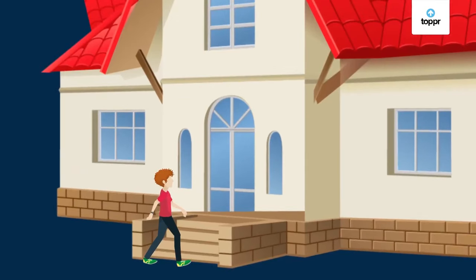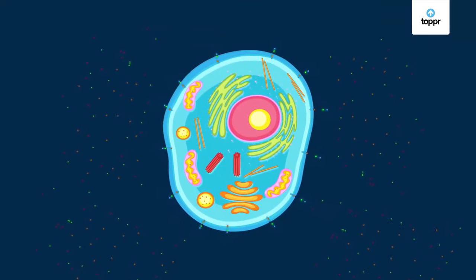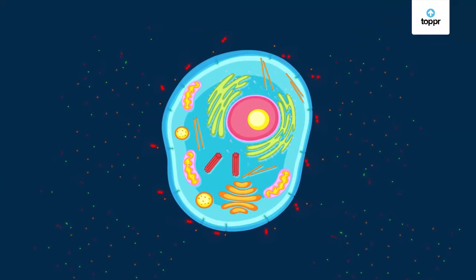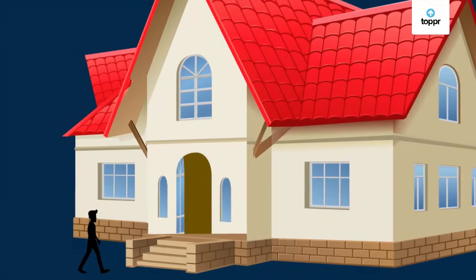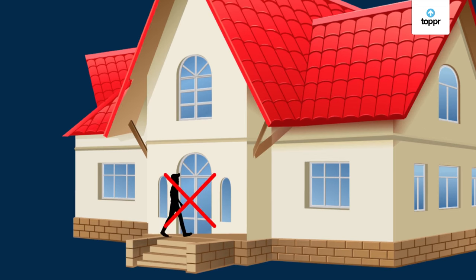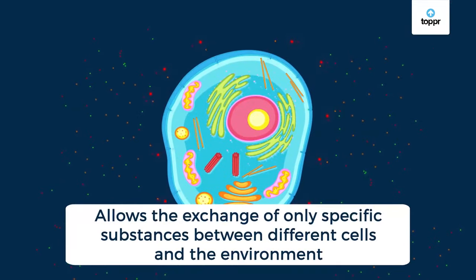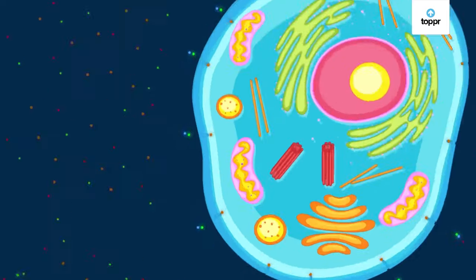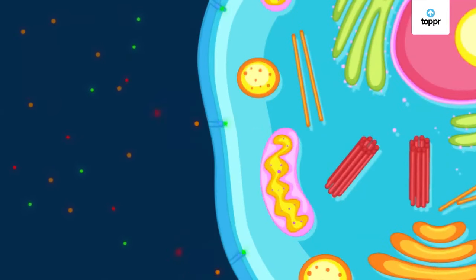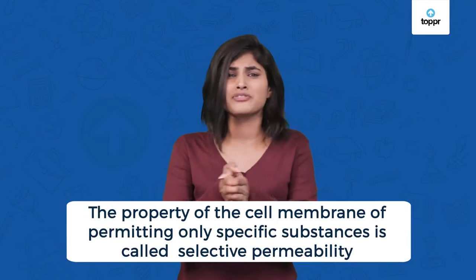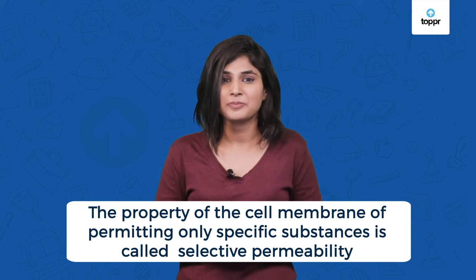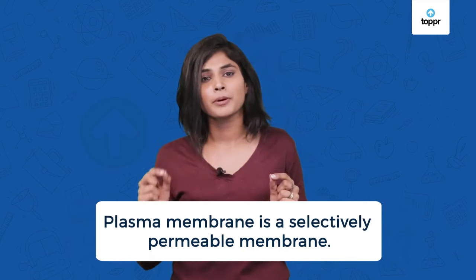Also, the door of a room allows us to go in and out. Even the cell membrane has its own doors to let things in and out. Just like a door can be unlocked only by us and not by a stranger, the cell membrane also allows the exchange of specific substances between the cell and the environment. It means the membrane only allows a few substances and blocks the rest. This property of permitting only specific substances is called selective permeability — so plasma membrane is a selectively permeable membrane.